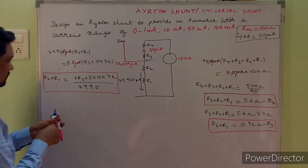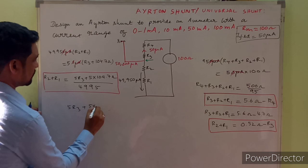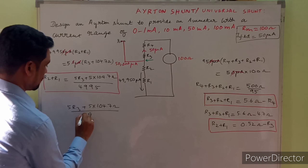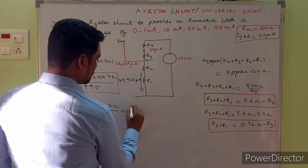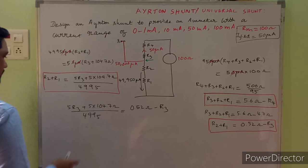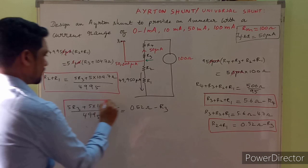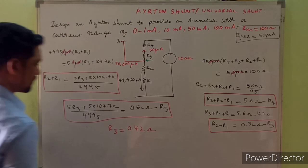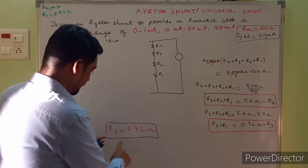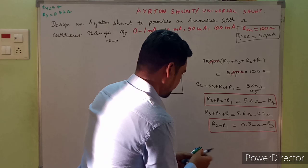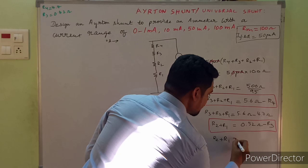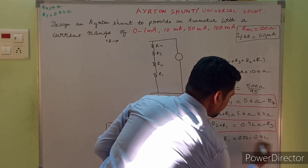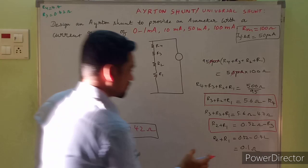We have two expressions for R2 + R1. Equating: 5×(R3 + 104.7) / 4995 = 0.52 − R3. Only R3 is unknown on both sides. Solving, R3 = 0.42 ohms. Plugging back: R2 + R1 = 0.52 − 0.42 = 0.10 ohms.